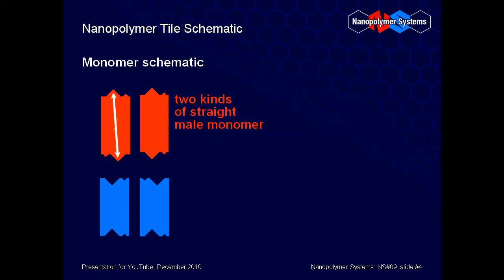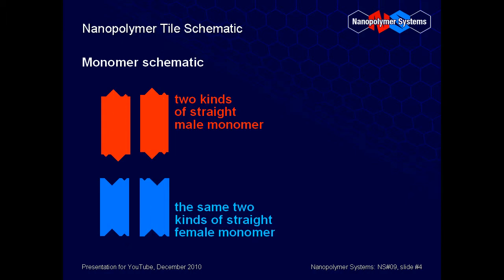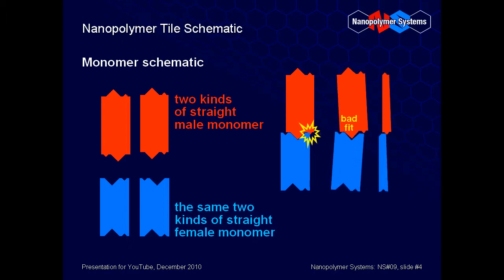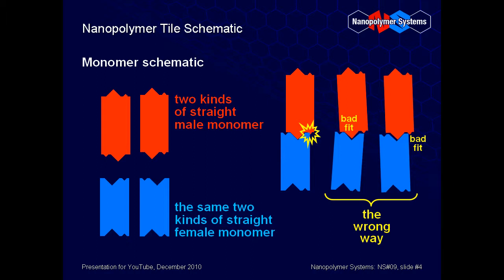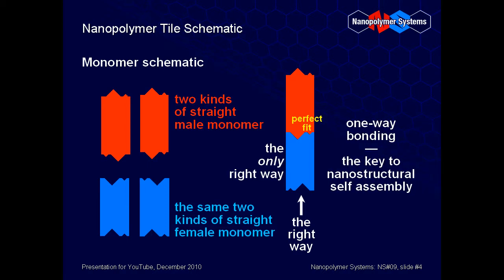The graphic analogy is also accurate in that there are two kinds of straight monomers of each sex. Furthermore, the secondary bonding features not only stabilize the correct fit, they destabilize the wrong fit. The secondary bonding features provide a significant thermodynamic influence that is the basis for the one-way-only bonding of NSC polymers, and also the basis for nanostructural self-assembly, otherwise known as bottom-up manufacturing.